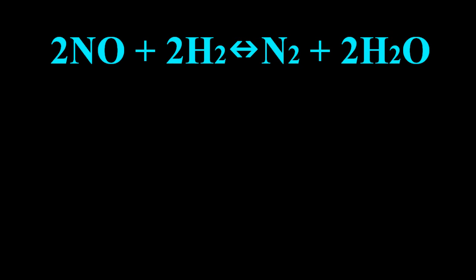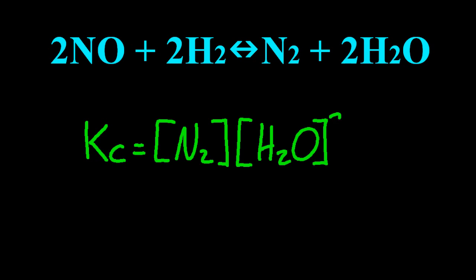Let's try another one. So capital K, small c. At the top, you put the products and raise them to the coefficient. And at the bottom of the fraction, put the reactants and raise them to their coefficients.